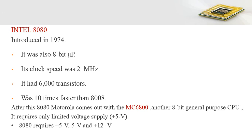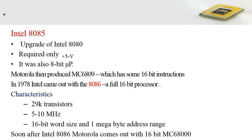After the Intel 8080, Motorola introduced the MC6800 processor, also an 8-bit general purpose processor. Its key improvement was requiring only a single plus 5 volt supply, whereas the Intel 8080 required three different voltage supplies: plus 5 volt, minus 5 volt, and plus 12 volt.